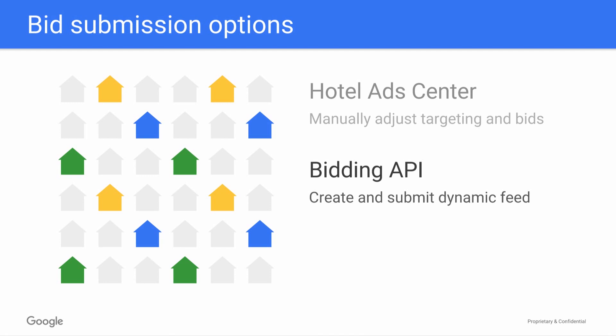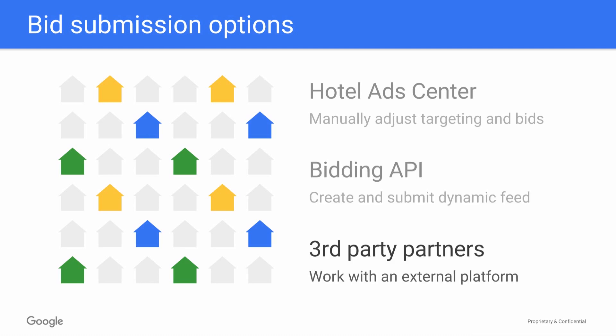As a second option, you can use the Google Hotel Price Ads API to develop and submit a data feed with bids that will talk to Google's system. If you decide to go this route, the bids you submit through the API will be reflected in the Hotel Ads Center as well. Your third and final option is to work with a third-party partner who can develop and manage your bids on your behalf. Keep in mind that your feed and bid management third parties do not necessarily need to be the same, but they certainly can be.